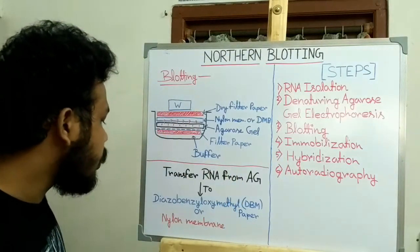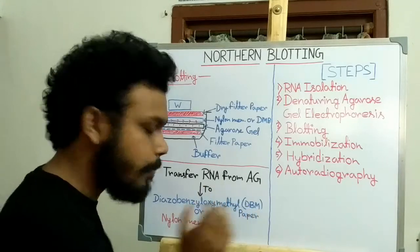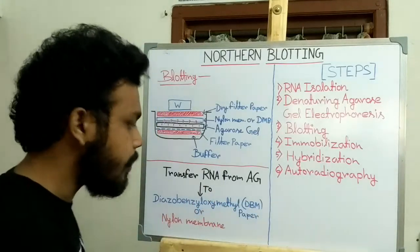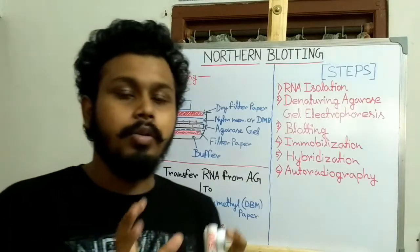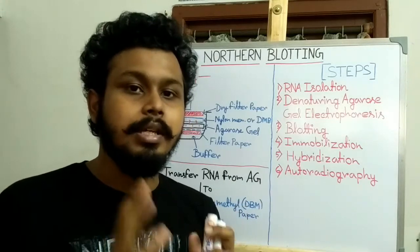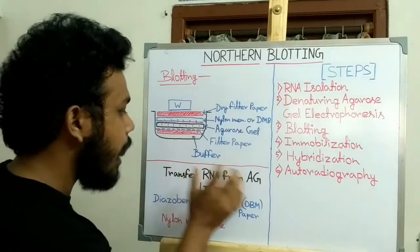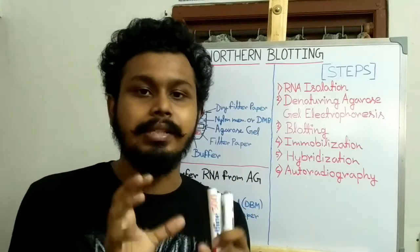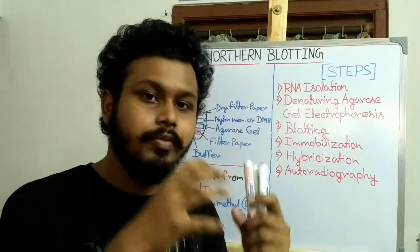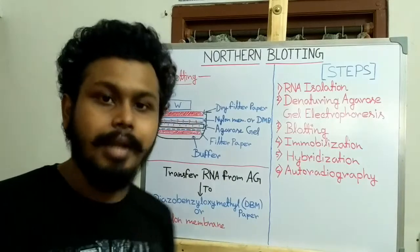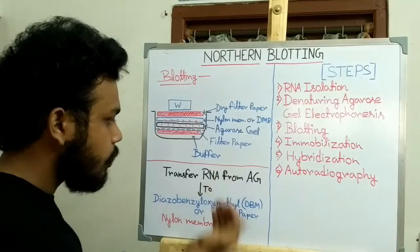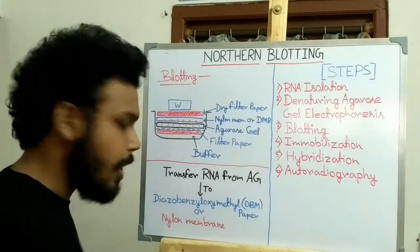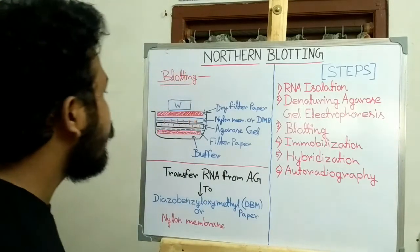After separating RNA molecules by size, they are transferred from the agarose gel to diazobenzyloxymethyl (DBM) paper or nylon membrane, and then hybridization is done with probes. The reason hybridization is not done in the agarose gel is that agarose gel is fragile and probes cannot hybridize with RNA properly in it, so transfer to the nylon membrane is necessary.